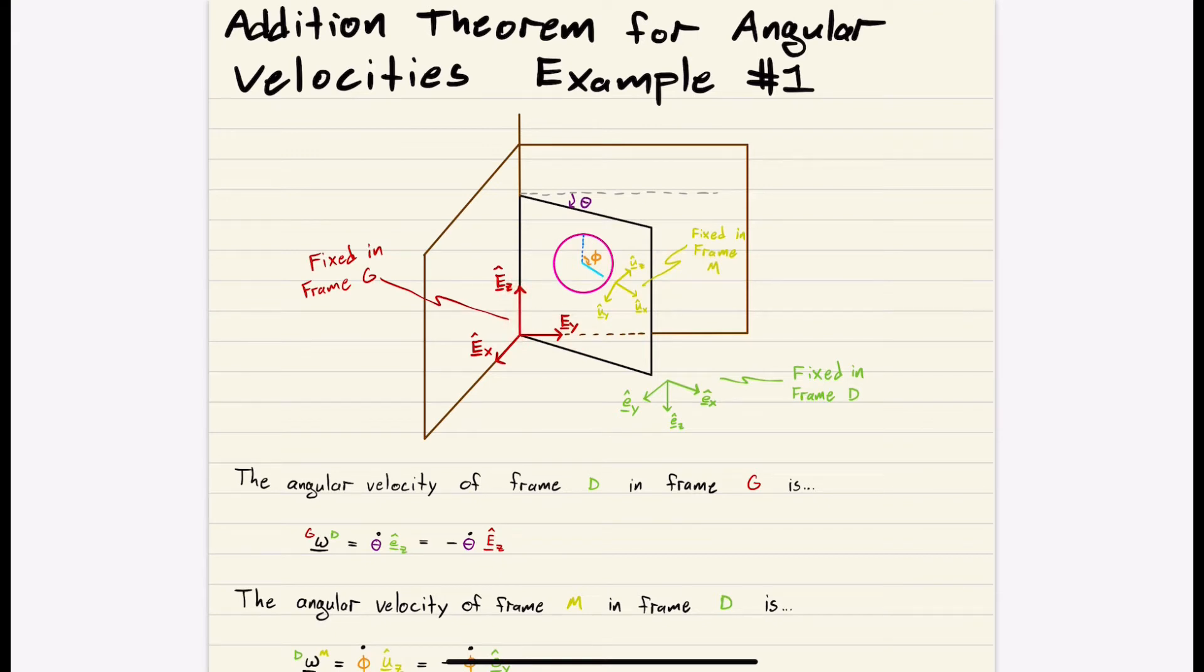Our next frame is frame D, D for door. And this is a non-inertial frame, because it's rotating, it's accelerating. And we have this green basis fixed to the door.